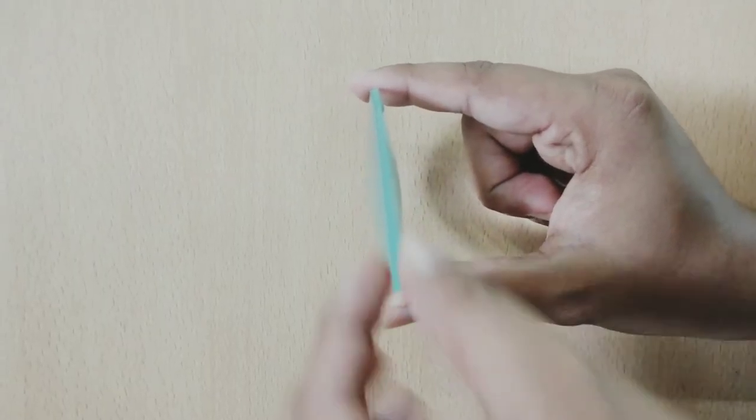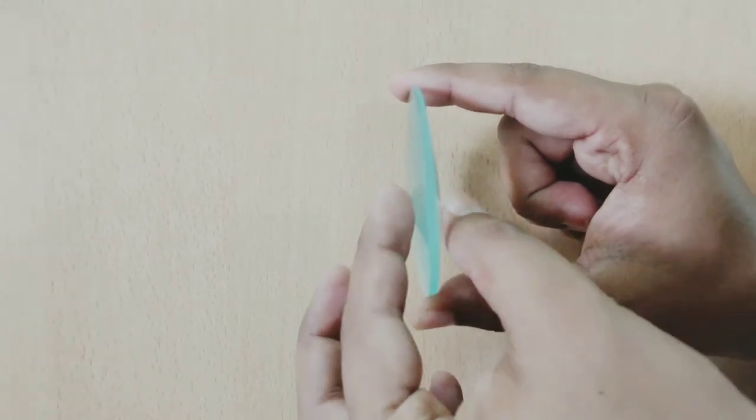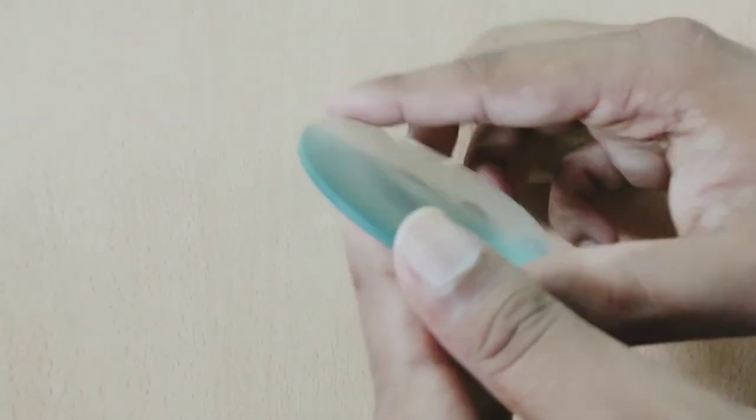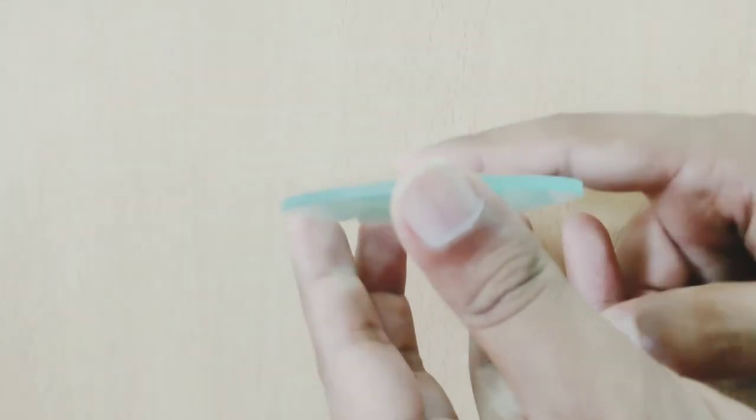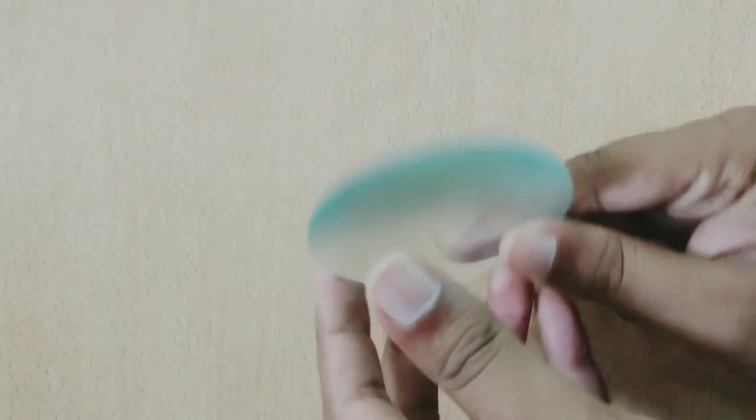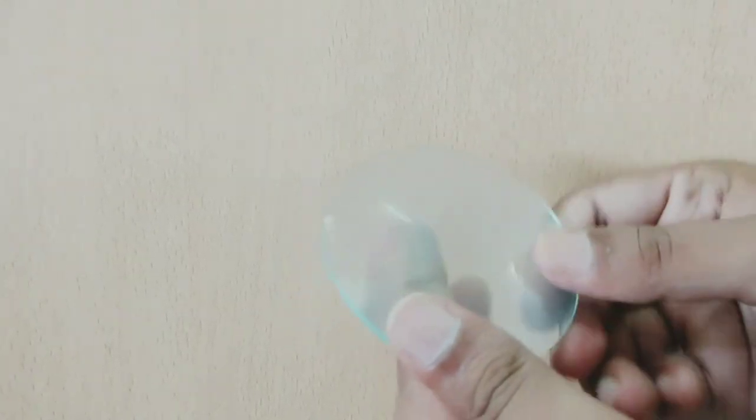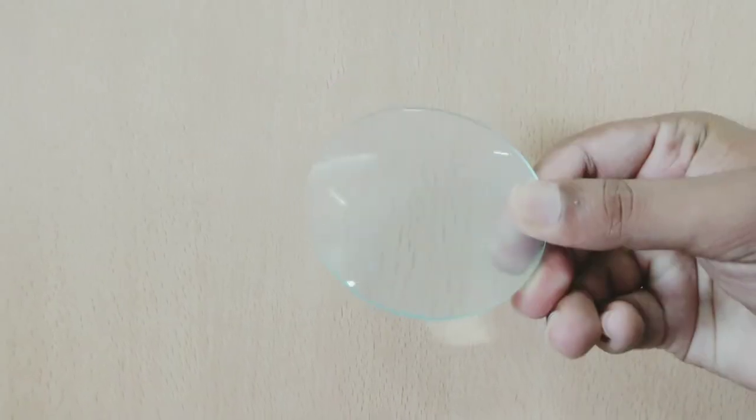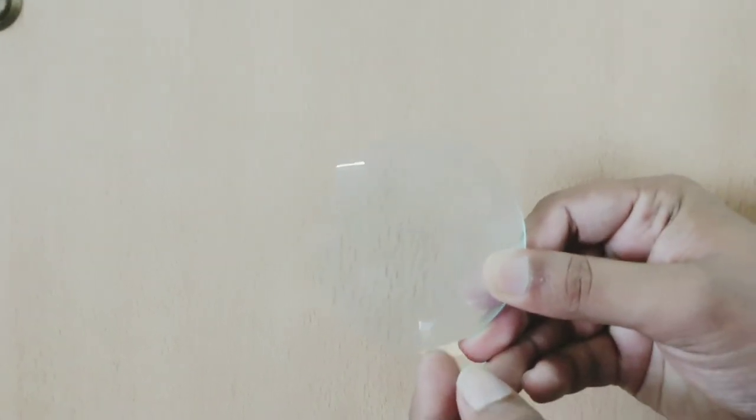A convex lens has two bulging portions. You can see the bulge over here, you can also feel the bulge. And of course it's a lens.